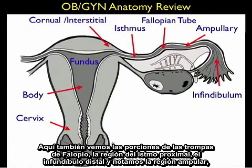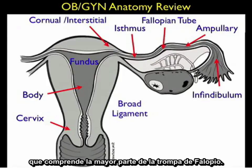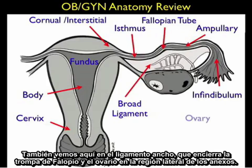Here we also see the portions of the fallopian tube: the proximal isthmal region, the distal infundibulum, and the ampullary region which comprises the majority of the fallopian tube. We also see the broad ligament, which encases the fallopian tube and ovary in the lateral region of the adnexa. Remember that the ovary is relatively mobile within the broad ligament.